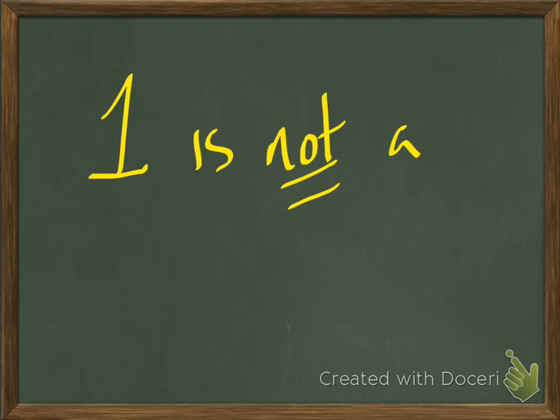So the first thing is, what do you need to know? Well, the first thing you need to know is that 1 is not a prime number. It just isn't everybody, and you're just going to have to know that.